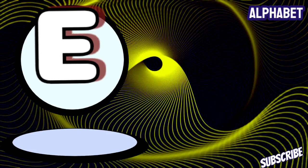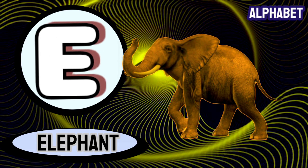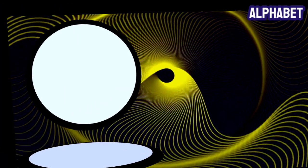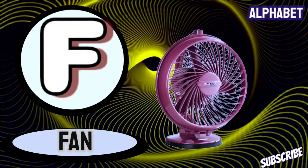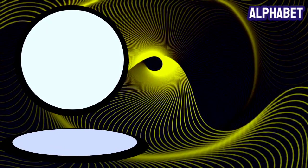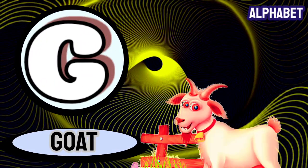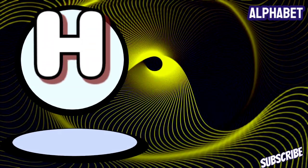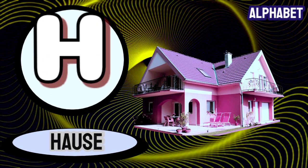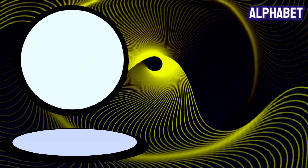E for elephant, F for fan, G for goat, H for house.